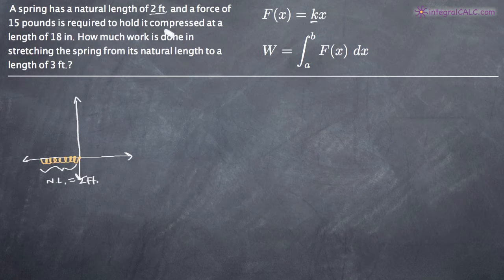So then they give us the information that in order to compress the spring to 18 inches, we're going to leave the left end of the spring fixed in the same position, so we're going to line these up.